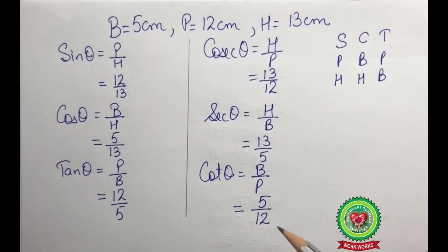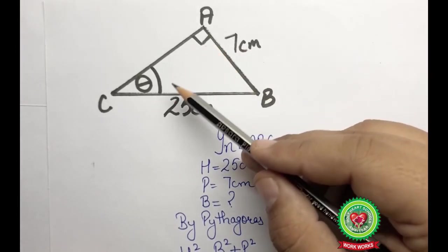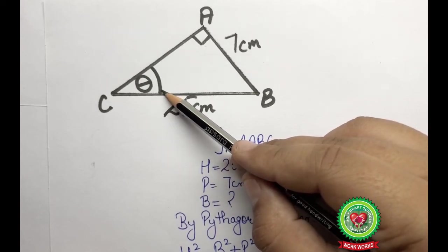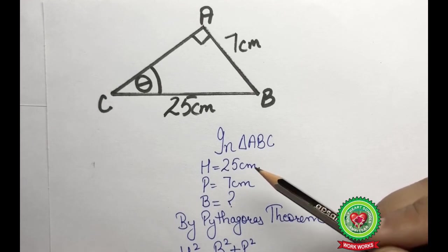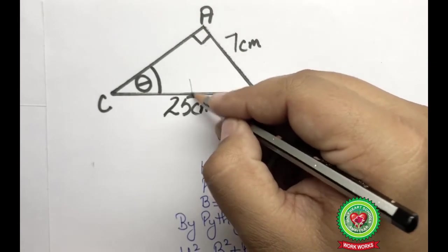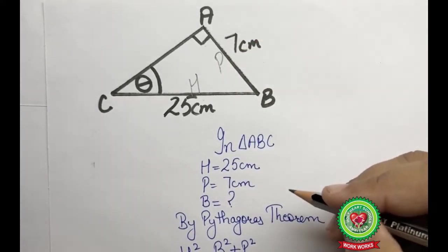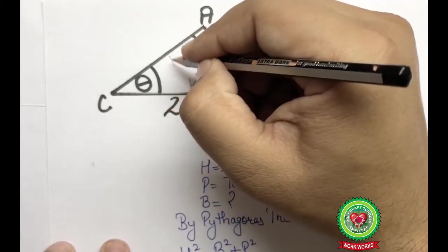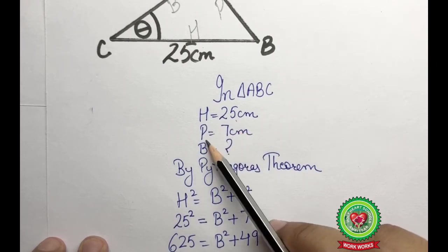Now let us discuss one more example for better clarity. In the second example, triangle ABC is a right angle triangle at vertex A, and the reference angle theta is at vertex C. The length of BC is 25 centimeters and the length of AB is 7 centimeters. The side opposite to 90 degrees, BC, is the hypotenuse. AB is the perpendicular and AC is the base.